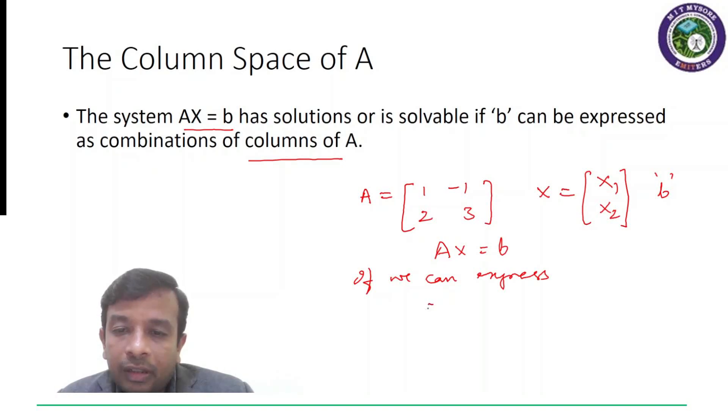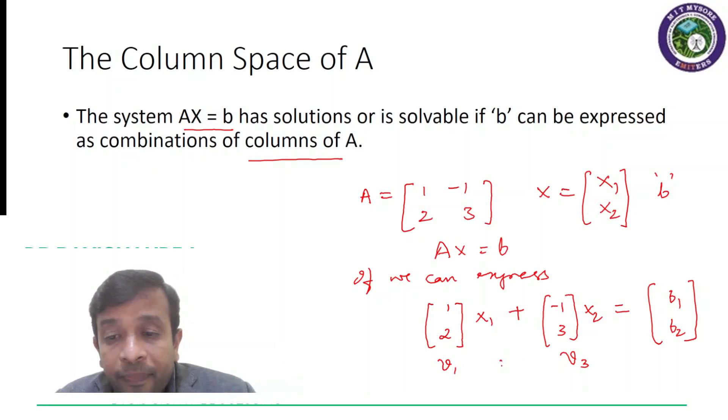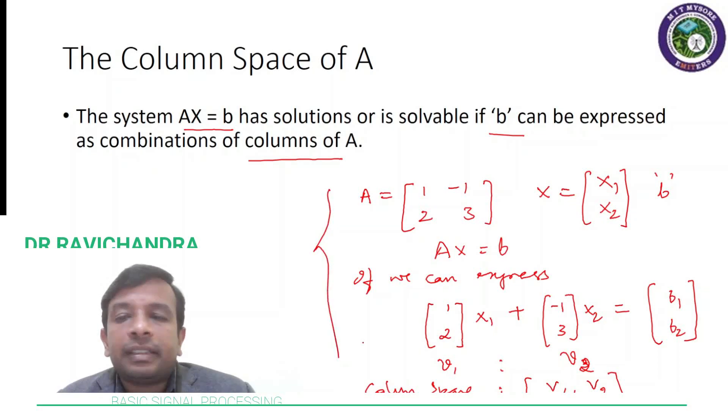AX equal to B as something like this, 1, 2 times X1 plus minus 1, 3 times X2 equals B1, B2, that is vector B. Then 1, 2 and minus 1, 3 column vectors will be part of column space or will constitute column space of A. Column space would be V1 and V2, right? I hope that is understood. If we can express in this fashion, then we can also declare that AX equal to B has solutions or is solvable. So that makes the column space of A.